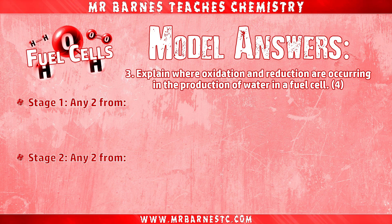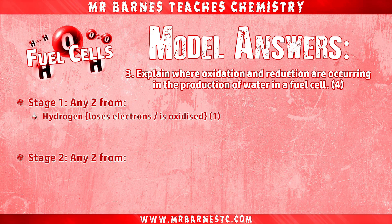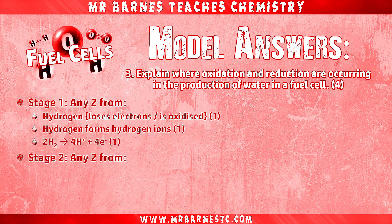On to question three — we've got two stages of which you can get two marks from each. For stage one you can say that hydrogen loses electrons or is oxidized for one mark. You can also say that the hydrogen forms hydrogen ions for the second mark, or you can put the ionic equation: 2H2 → 4H+ + 4e⁻. Any two of those three points will get you two marks for stage one.